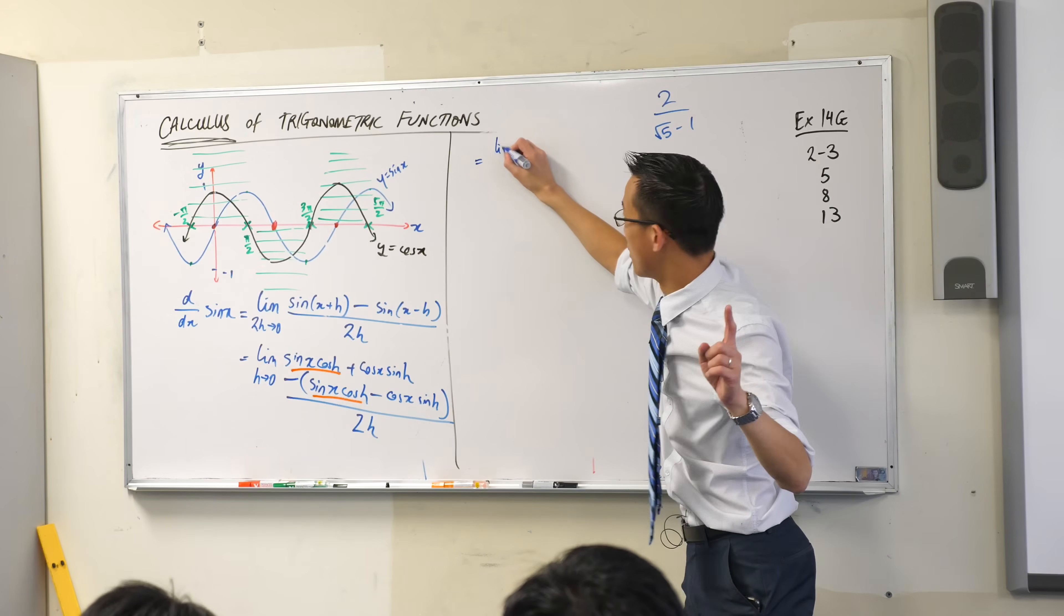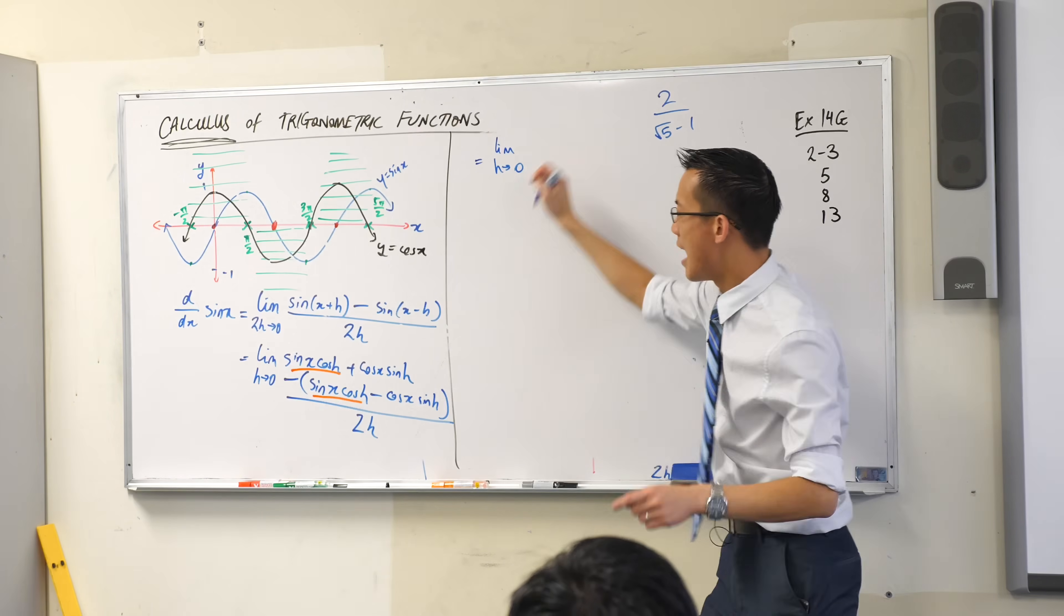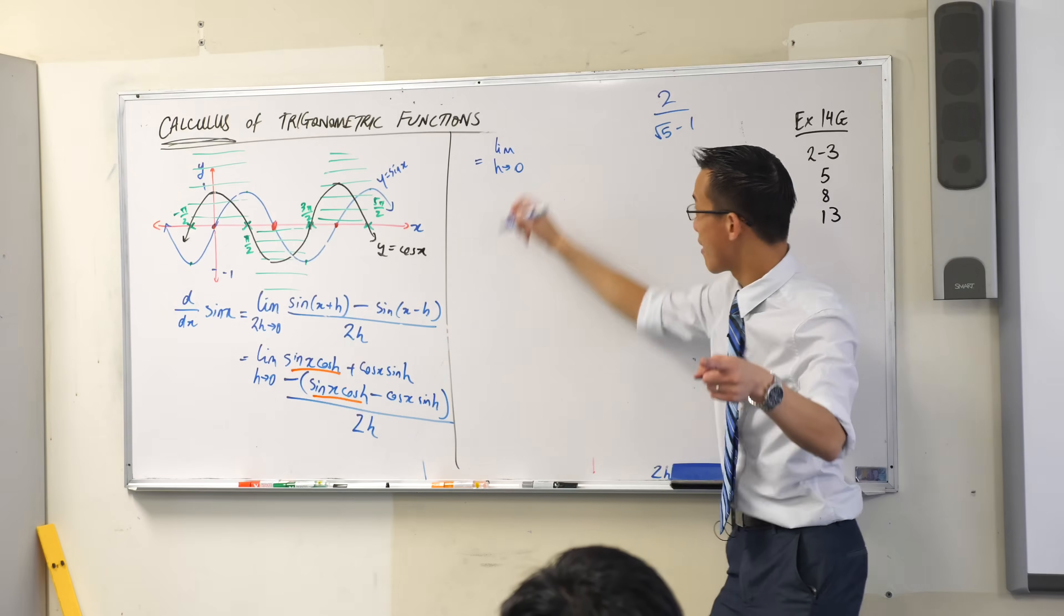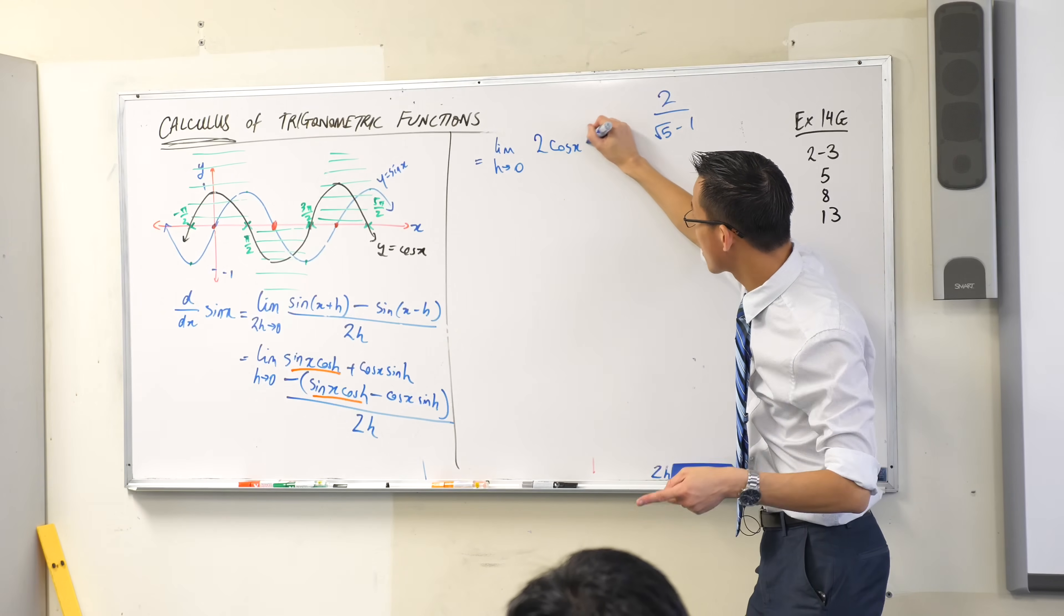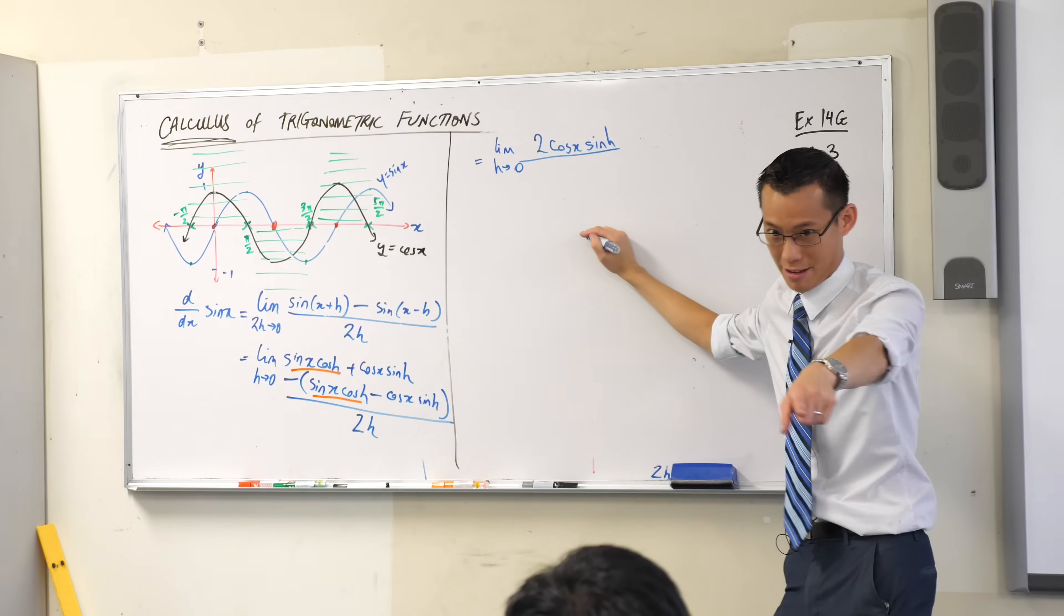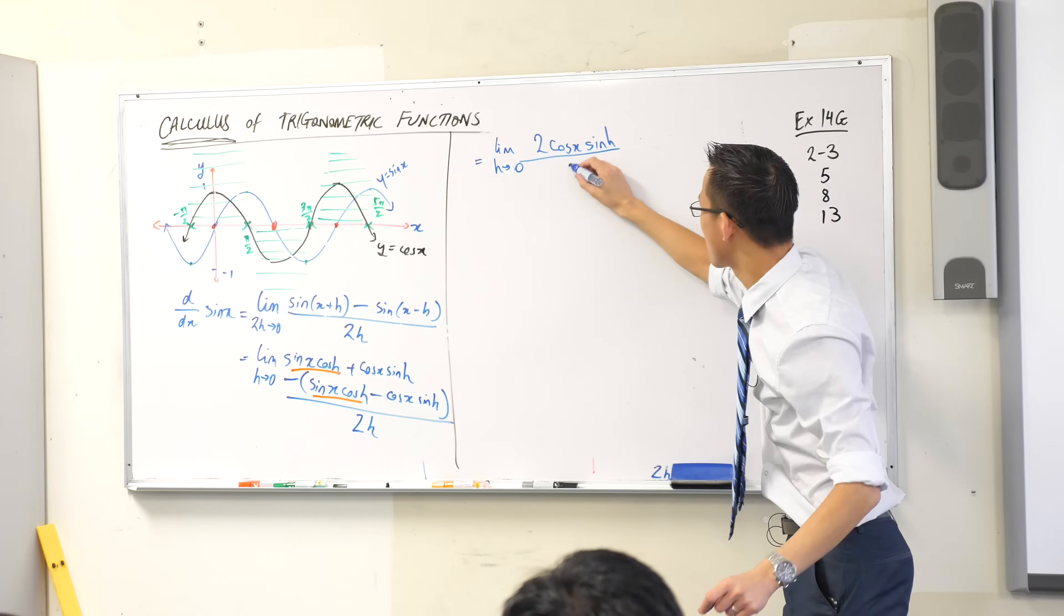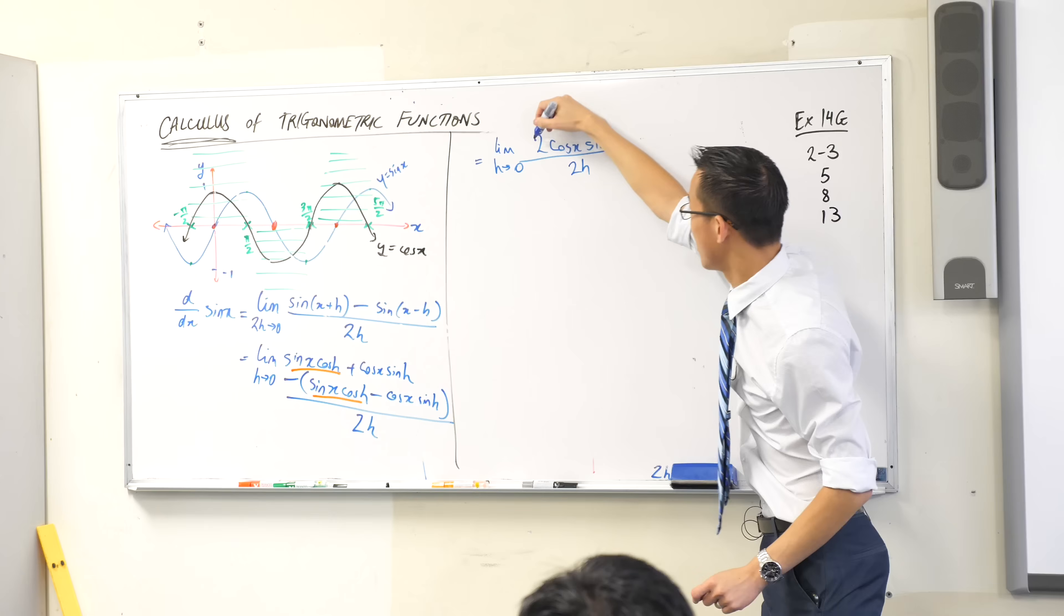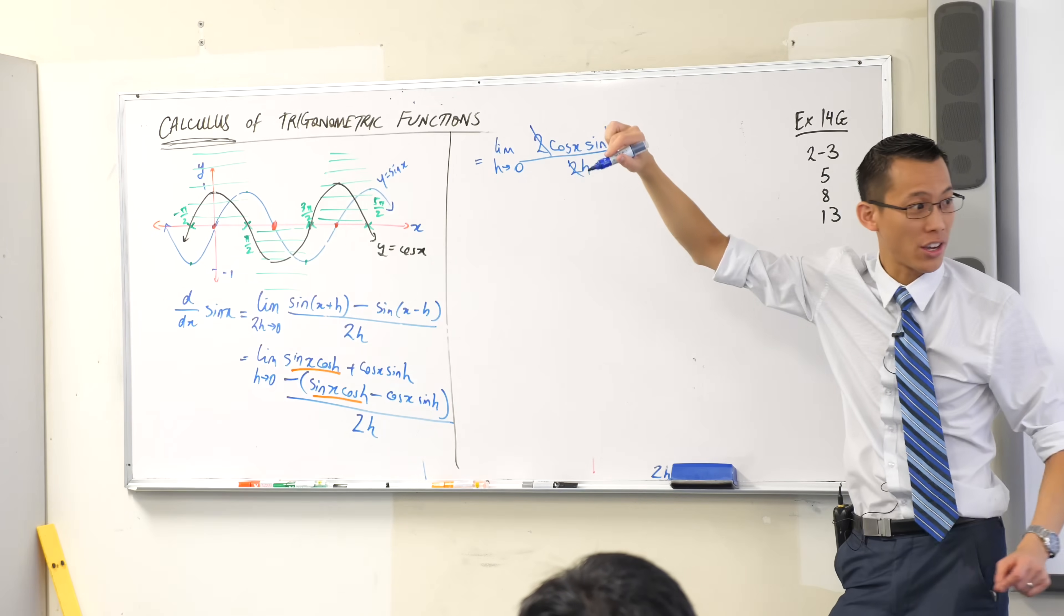What do I get left with on the numerator? Hold on. I better write that limit first. I've got this twice over, right? 2 cos x sin h. What's the denominator? 2h. These two twos will cancel. They're gone.